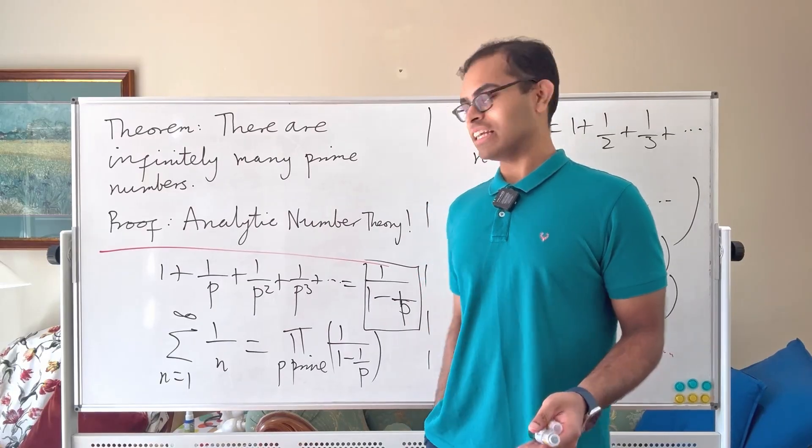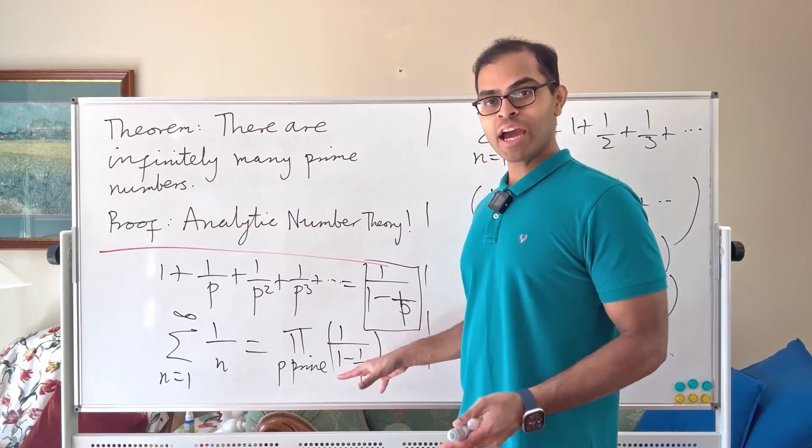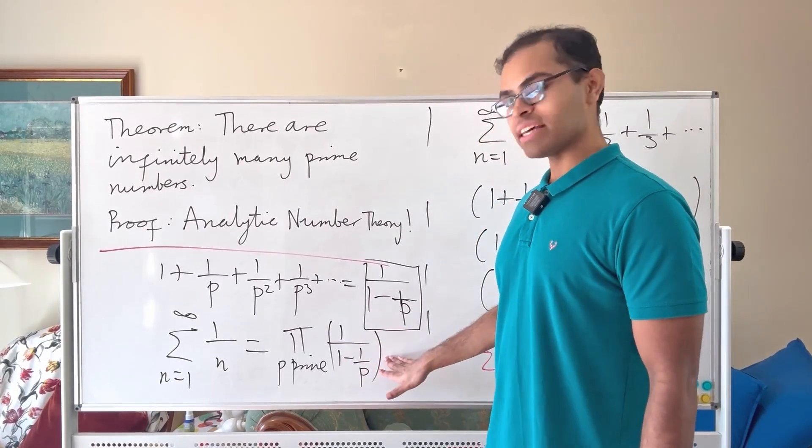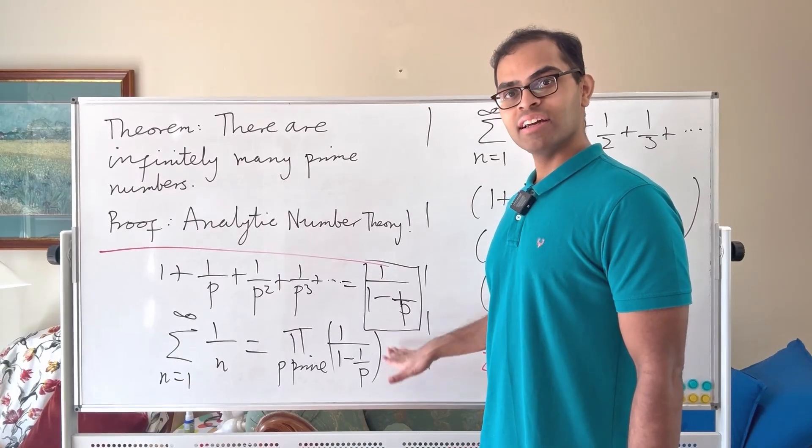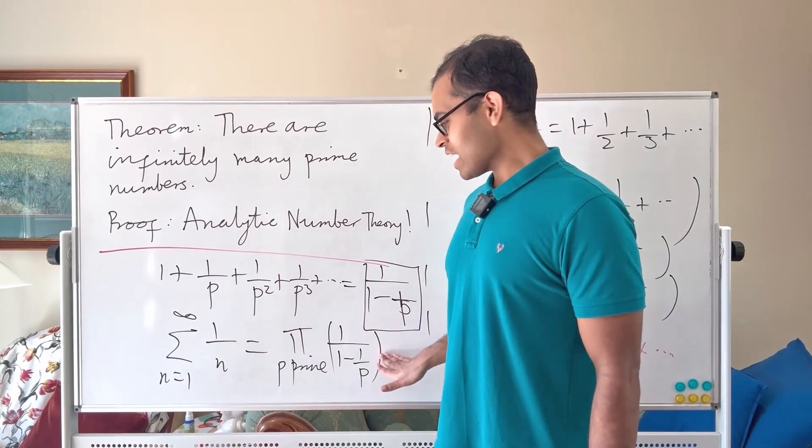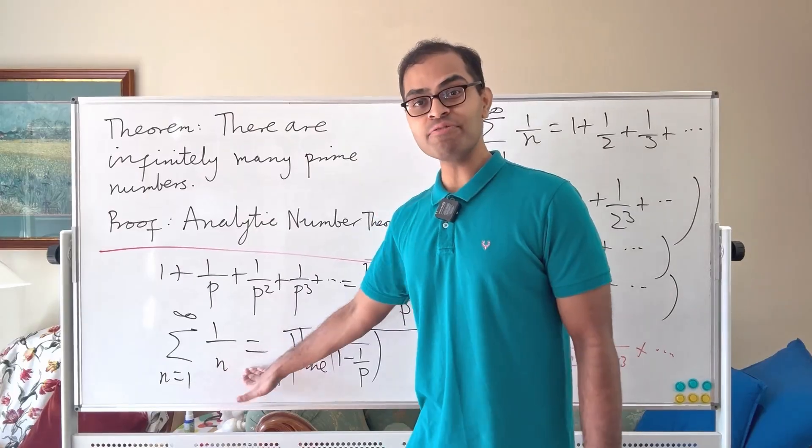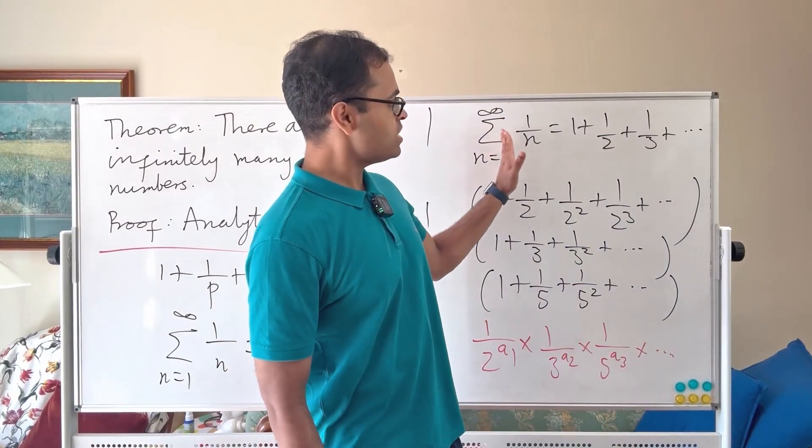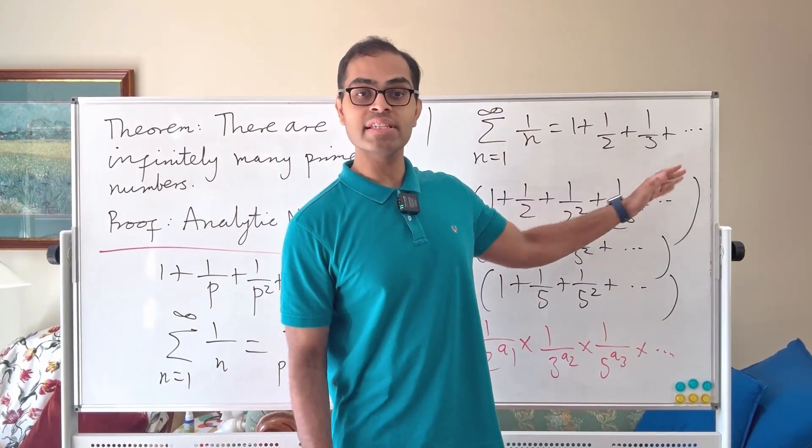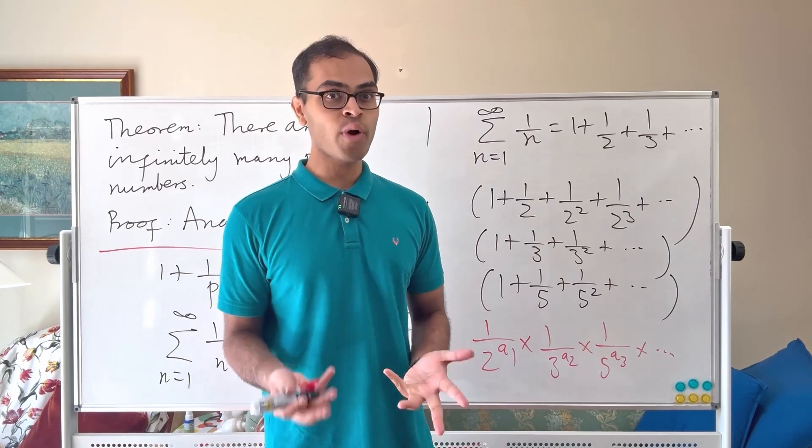Now here's the beautiful thing. If there were finitely many prime numbers then this right hand side would be a finite number. However you can prove that the left hand side is not a finite number. It's infinite. In other words the series even though you're adding smaller and smaller numbers actually becomes infinity. It's quite crazy.